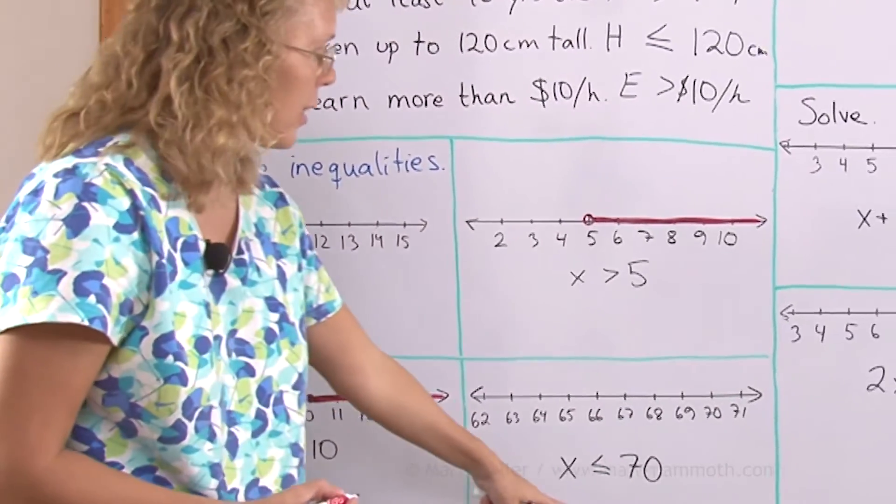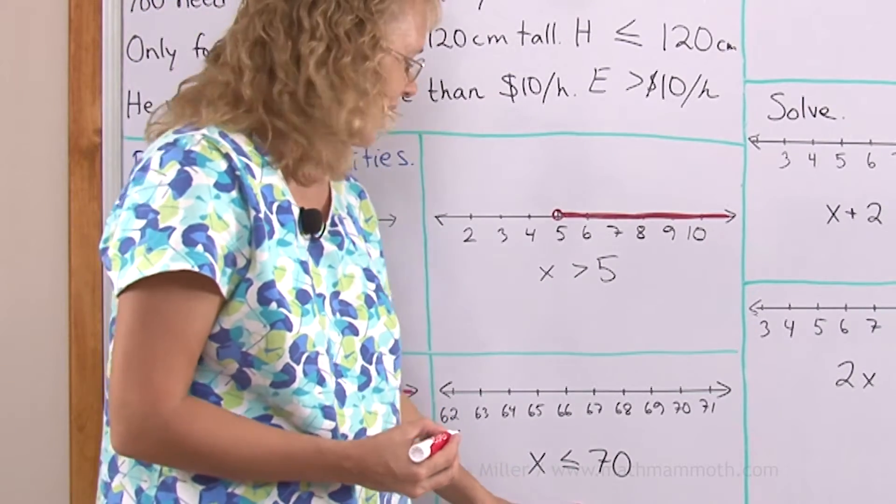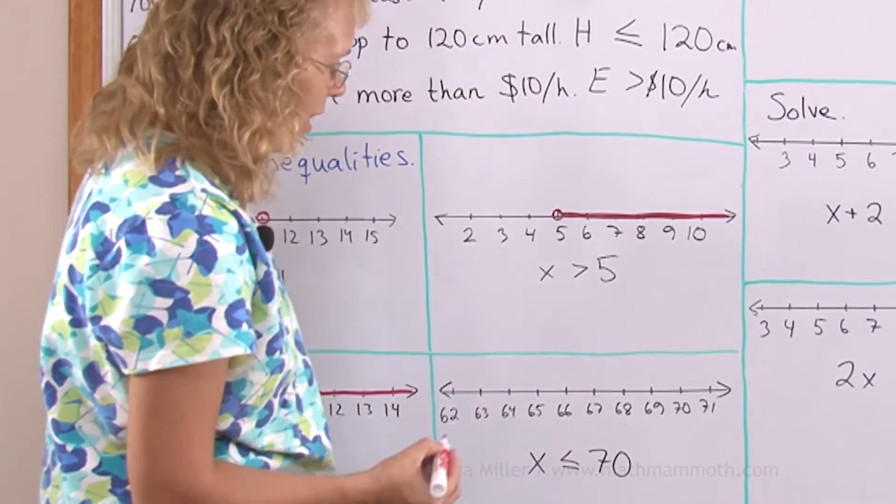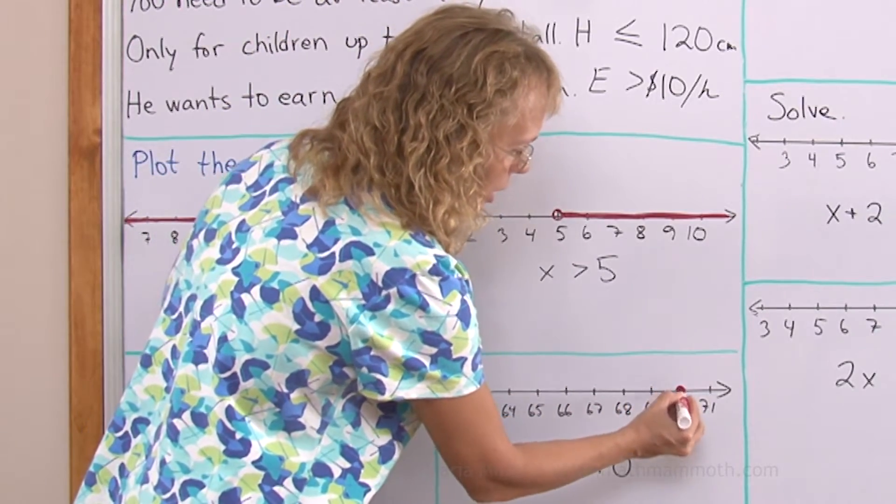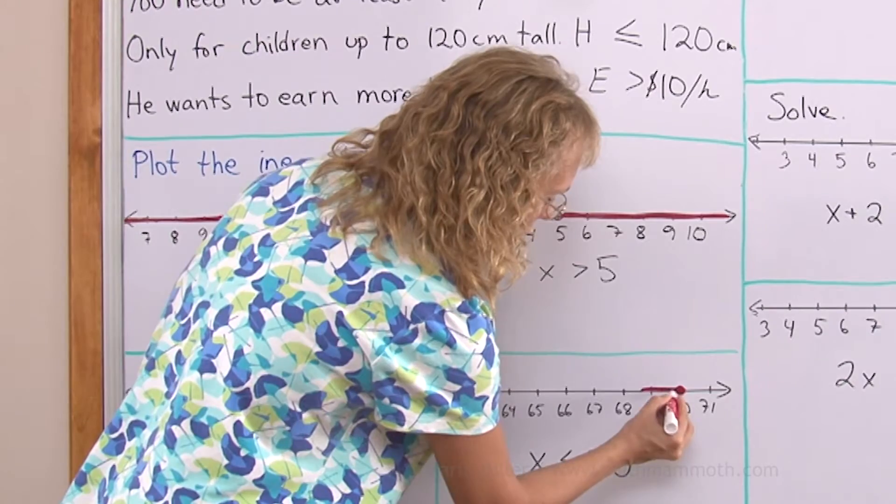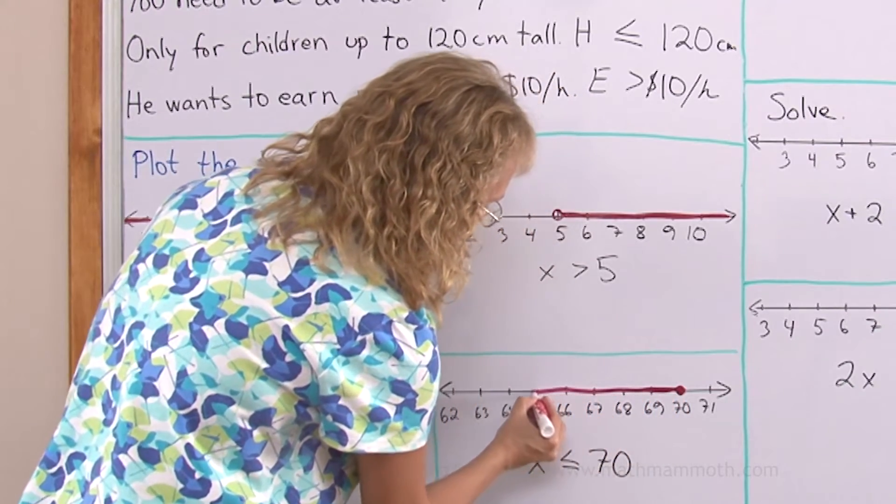And here x is less than or equal to 70. x is either a smaller number than 70 or x could be 70. So I'll draw a closed circle here at 70 and then color the number line this way.